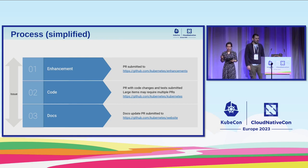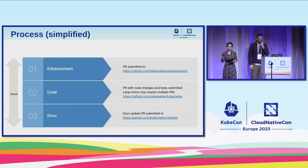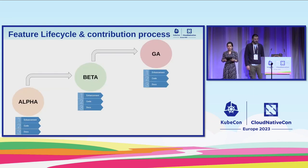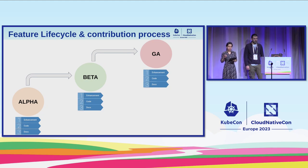An enhancement issue is used to track the progress of the entire feature. This issue is referred to by the release team, and it's important to keep it up to date, as that's how they track and make sure the feature becomes part of a particular release. This diagram shows the summary of the contribution process throughout its entire life cycle. The enhancement issue should be updated at every stage, ensuring that the first time the feature was introduced and every time any update was made, the changes are reflected in the enhancement issue.